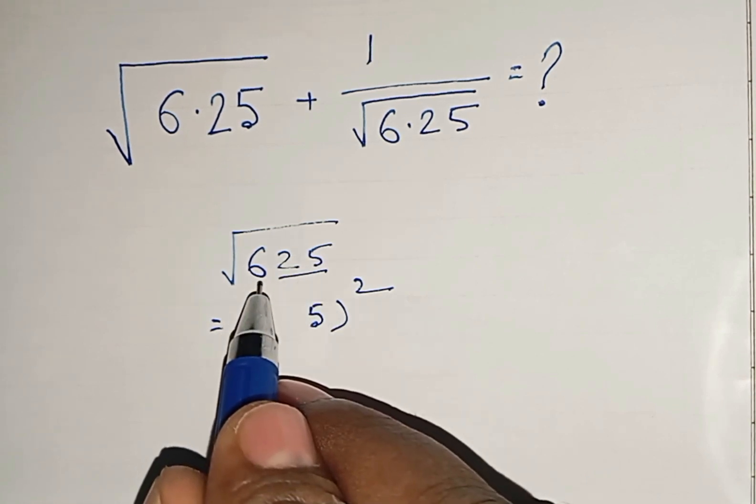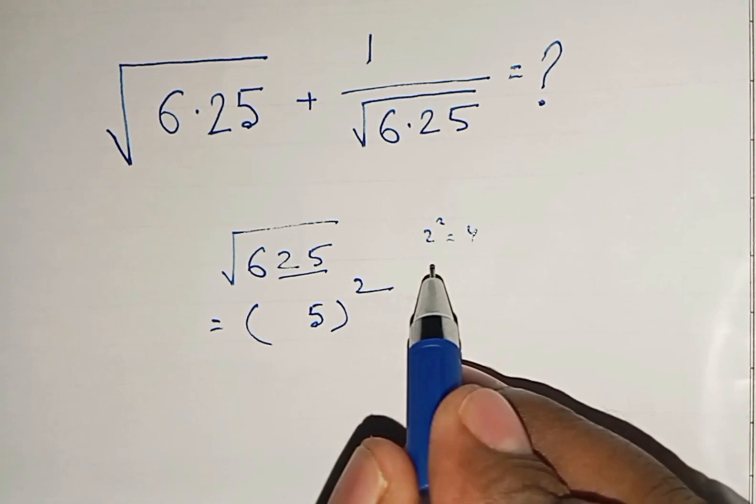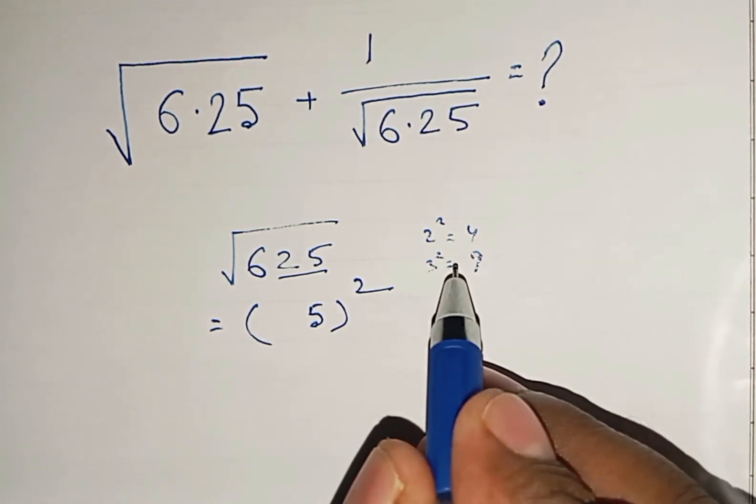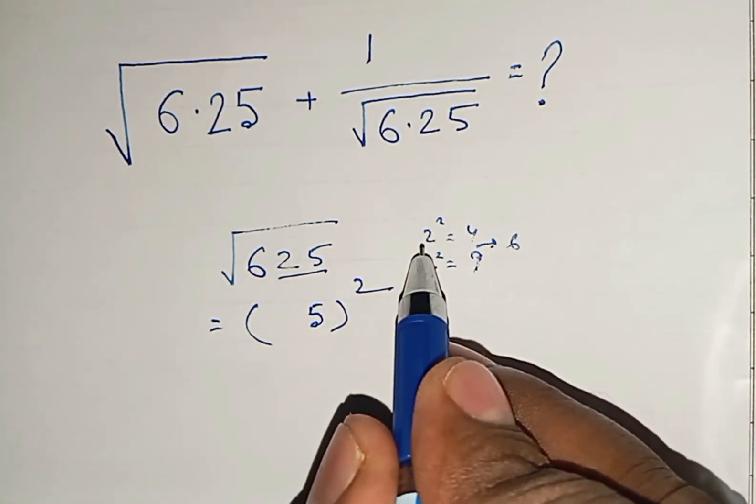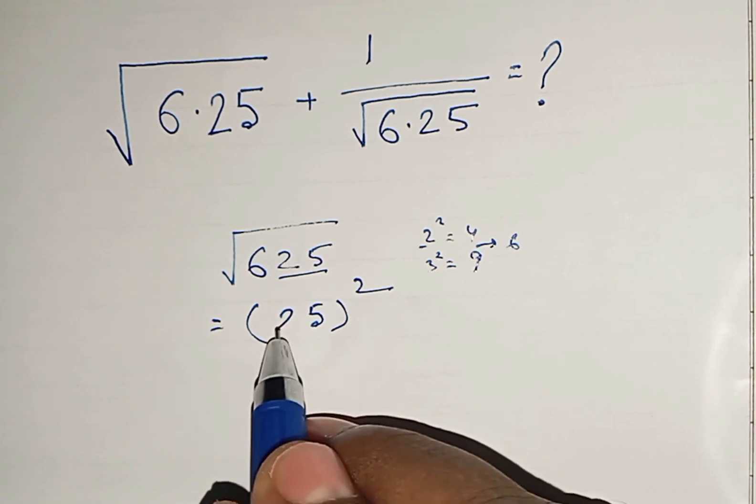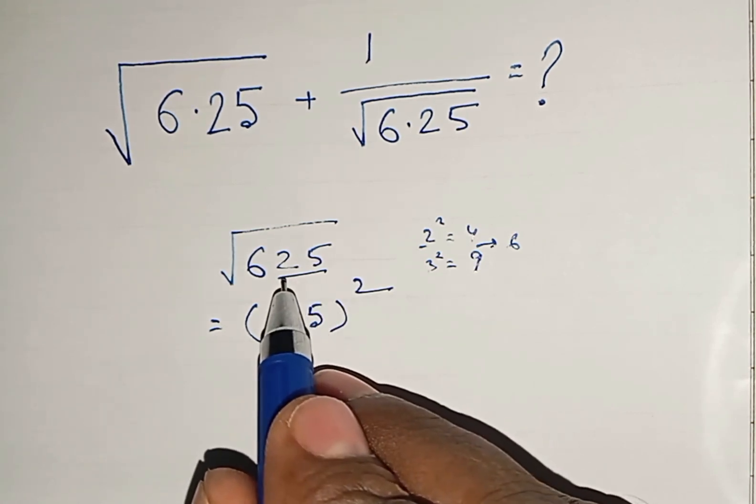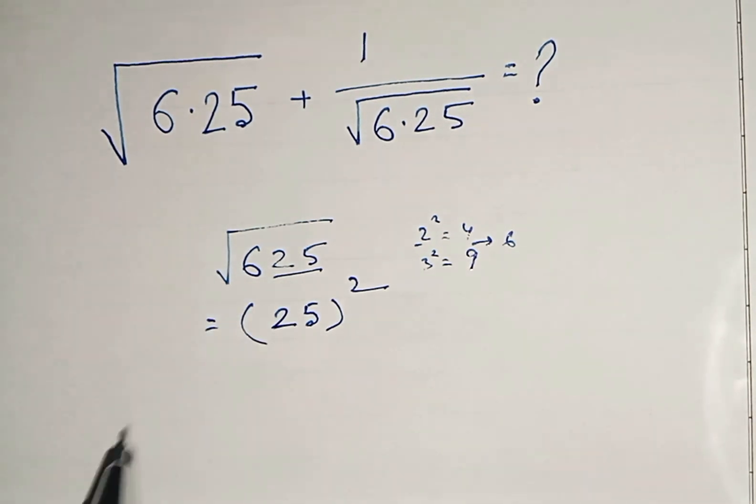Now, here it is 6. 2 squared equals 4 and 3 squared equals 9, so 6 is in between these two. The lower number is 2, so it will be 2. One can remember 25 squared equals 625. Now we can solve these things.